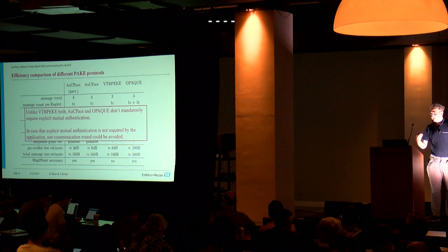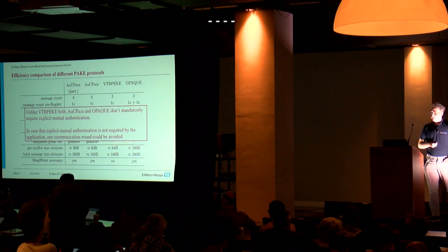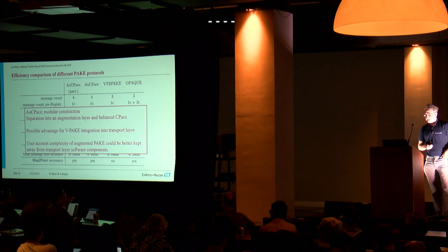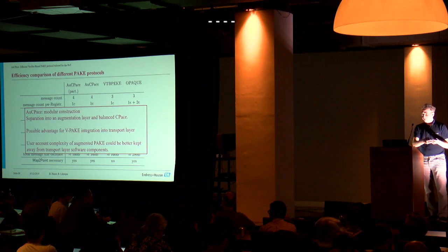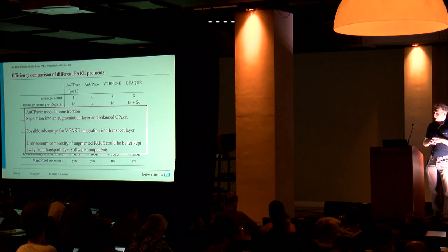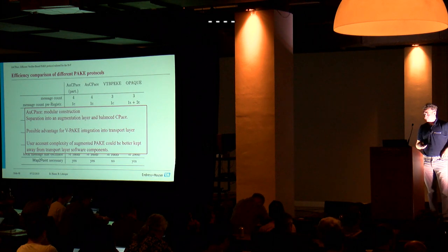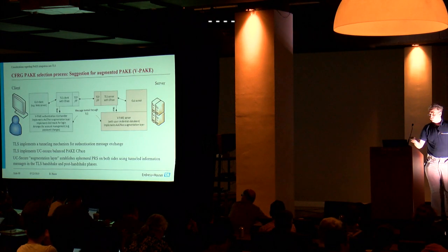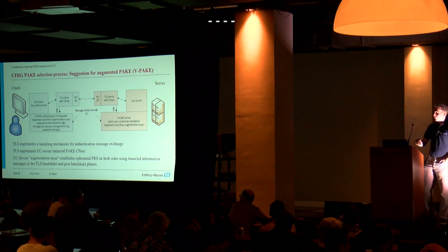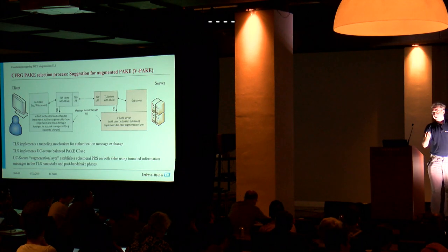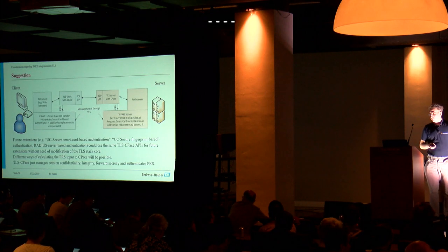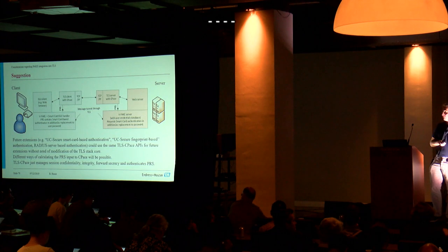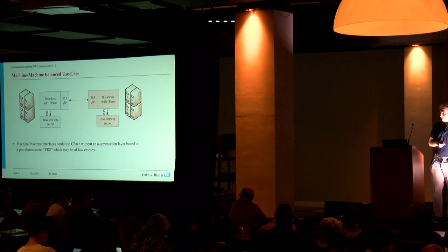Unlike VTBP, OPAQUE and AugPACHE both don't mandatorily require mutual authentication. This could be an advantage if integration in protocol which already has this confirmation integrated is desired. AugPACHE is a modular construction. We have the separation into the augmentation layer and the balanced PAKE and this provides a possible advantage for separating the different layers when trying to integrate a VPAKE protocol in a transport layer. So my proposal for instance when trying to integrate PAKE protocol into TLS is to integrate the balanced subprotocol C-PACHE into TLS and provide the PRS string externally. This would also allow for more flexibility for instance by integrating two-factor authentication or smartcard-based authentication which could be realized without modification within the TLS layer.